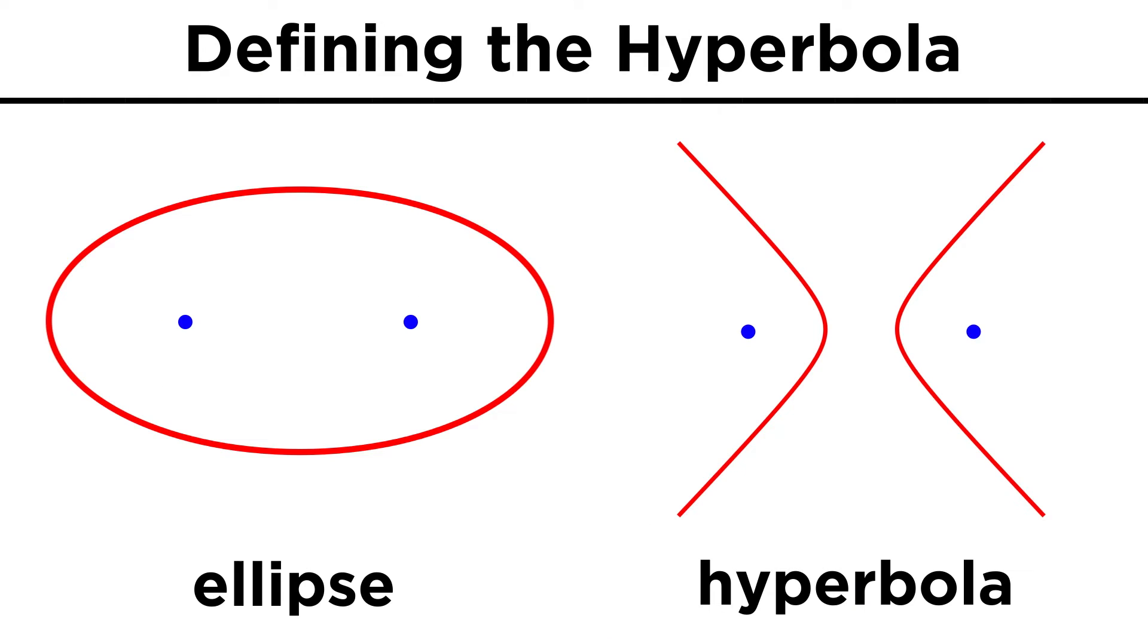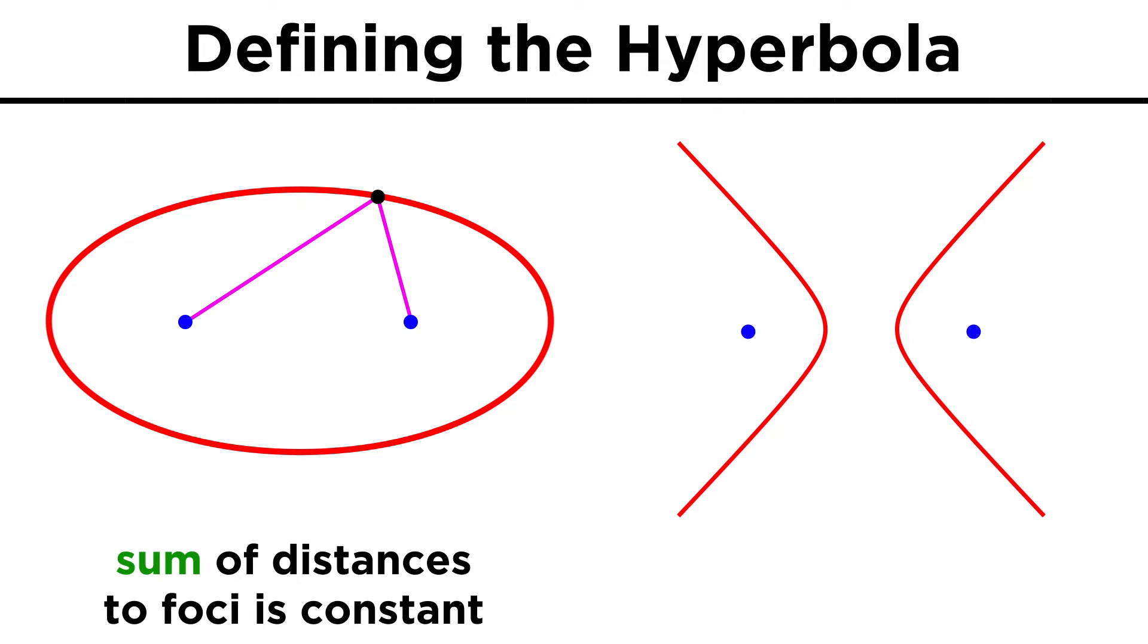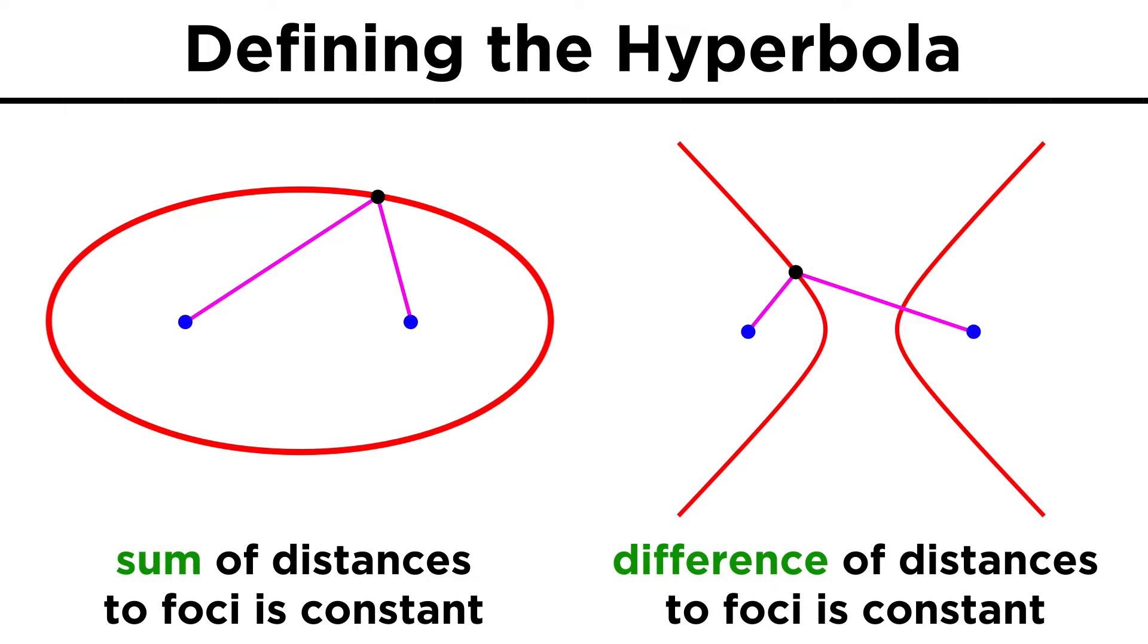The definition of a hyperbola is similar to that of an ellipse, where there are two foci, except that while every point on an ellipse has distances to these foci that give a constant sum, every point on a hyperbola has distances to the foci that give a constant difference.